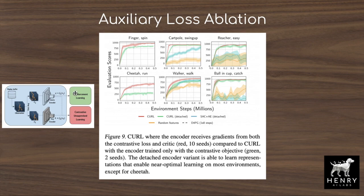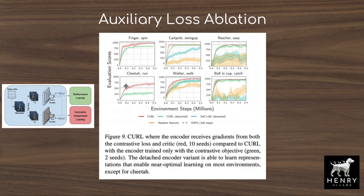CURL takes gradients from both the RL loss and the momentum contrastive unsupervised learning loss to update the mapping from O to Q. An ablation comparing only contrastive learning loss versus both losses shows that for tasks like finger spin, walker, ball-in-cup, and reacher, you don't seem to need the RL gradients — but for cheetah run, the most complex task where performance still hasn't reached the maximum, both gradient sources matter.